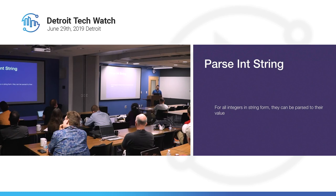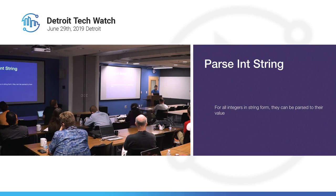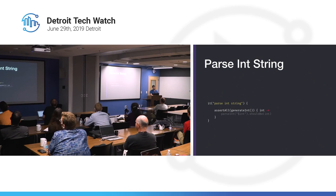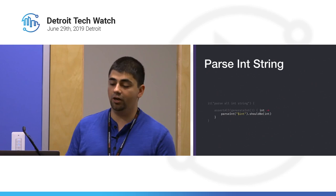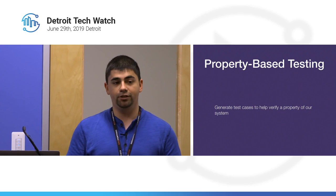Let's go back to our parseIntString example. What we really want to say is: for all integers in string form, they can be parsed to their integer value. So what if we had the computer generate integers for us? We take that integer, put it in string form, assert it should equal the integer value, and the computer can do this a ton of times. That's really what property-based testing is all about — generating test case scenarios to verify a property of our system.